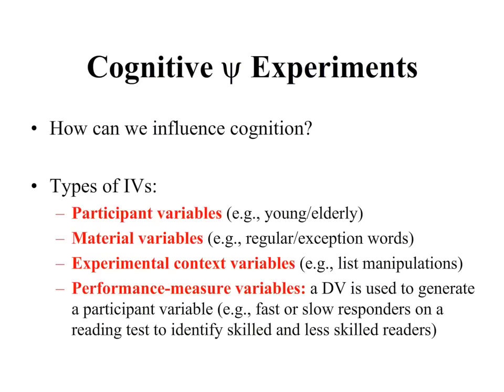How do cognitive researchers influence cognition? It's through the types of independent variables we use. The different types of independent variables will either be ones we have direct control over, leading to true experiments, or ones we don't have direct control over — where we simply classify people — and those are called quasi-experiments. For example, participant variables: as a researcher, I can't make you any younger or older. I have no control over that, so that variable makes a particular experiment quasi-experimental.